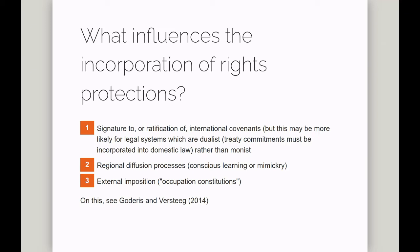That grouping of rights is fairly common, and it suggests that one big factor in determining which rights are included in a constitution is simply when it was drafted — more recent constitutions are more likely to include collective or economic rights. In terms of other factors, Guderis and Verstig have listed participation in international covenants, such as the convention on the elimination of discrimination against women, as things countries might subsequently incorporate into their constitution.